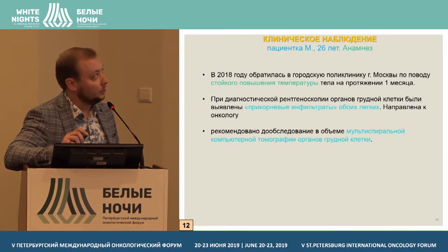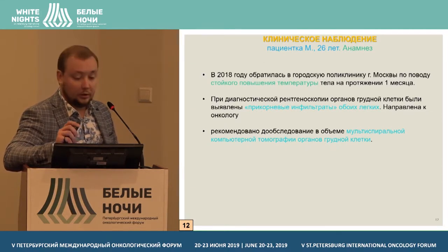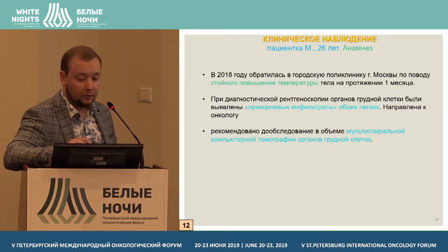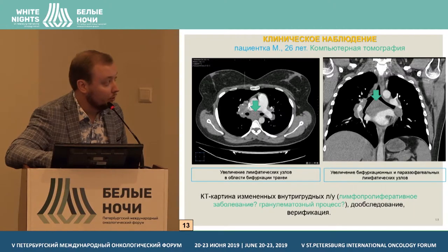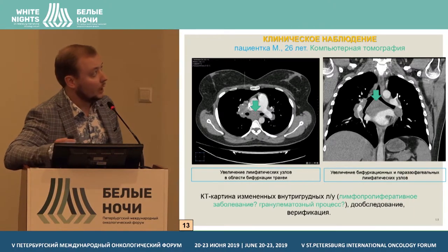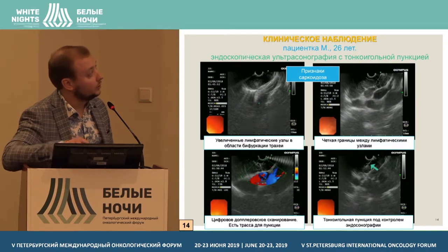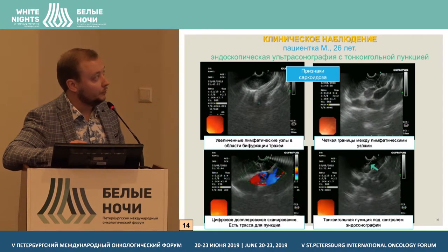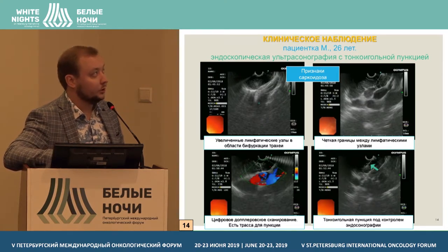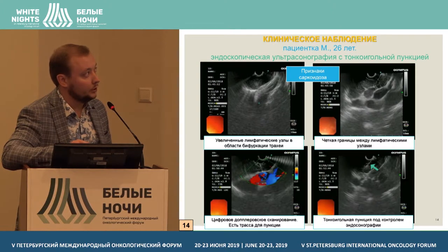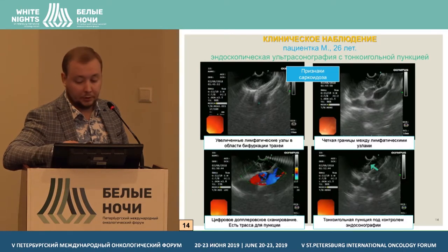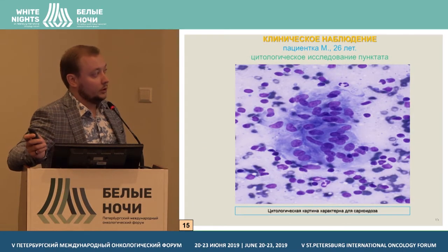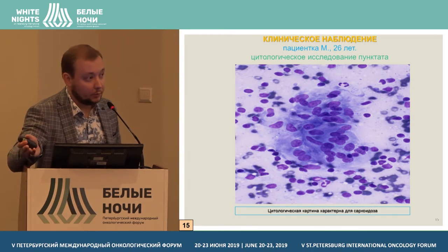The second patient presented with persistent fever. We performed X-ray tomography and observed enlargement of intrathoracic lymph nodes. The sonographic picture suggested sarcoidosis — we see enlargement of lymph nodes in the tracheal bifurcation region with signs of benign lesions. Here we see the trajectory for puncture and the puncture itself; the cytological picture is typical for sarcoidosis.